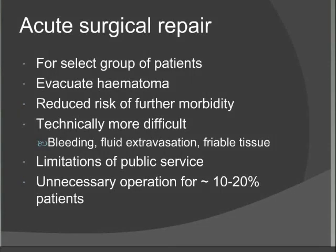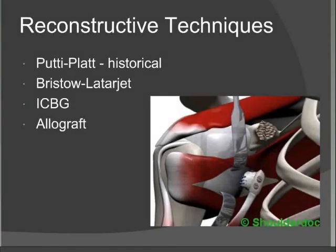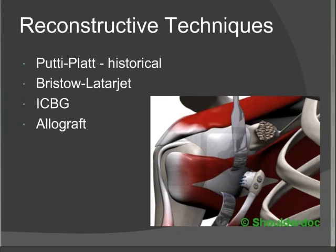There are also reconstructive techniques used when there are significant bony defects, bony Bankarts, or failed arthroscopic or open repairs. The Putti-Platt is a historical repair using the subscapularis. The Bristow-Latarjet procedure detaches the coracoid with the conjoined tendon from the coracoid process and uses it as a bony block anchored into the anteroglenoid rim. Other options include iliac crest bone graft blocks and, as some newer studies report, allograft use.